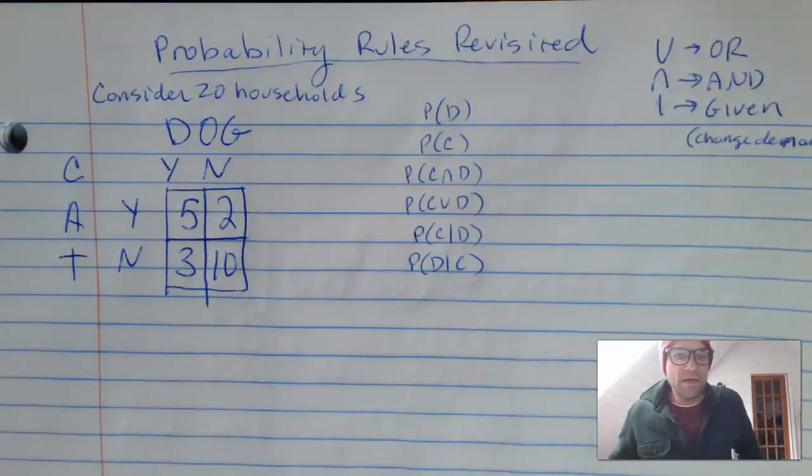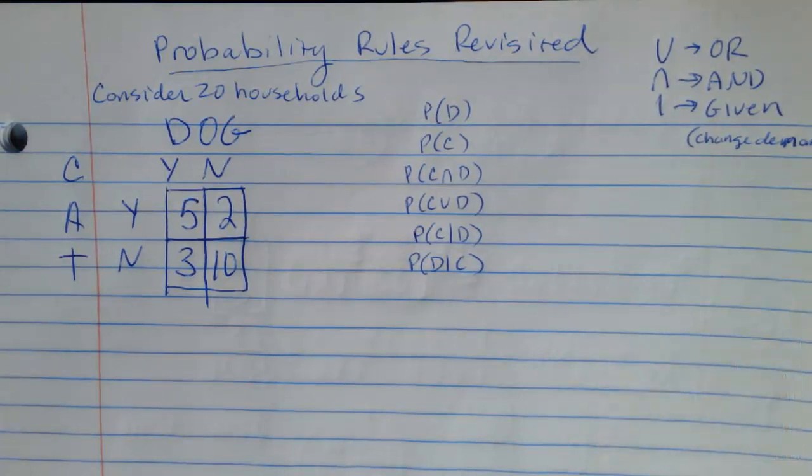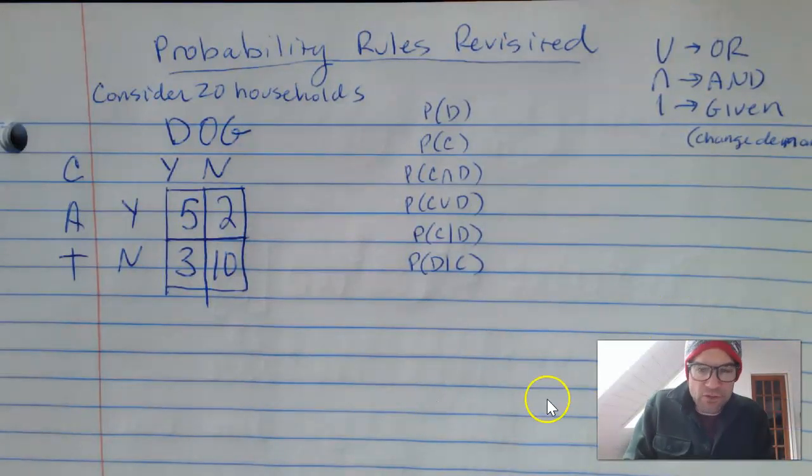So what are the probability rules? We're going to think about households — 20 households. And the households either have a dog or a cat, or both. We're going to look at those to think about what a bunch of different probabilities are, and then connect those to the rules that are given on the AP test, and finish by talking about independence.